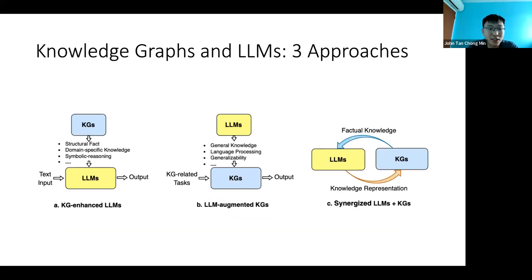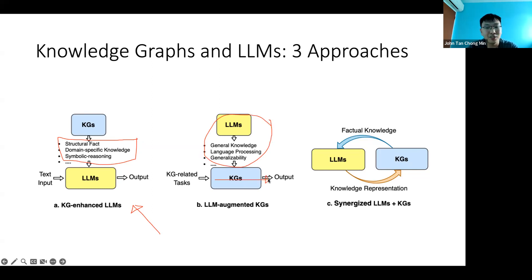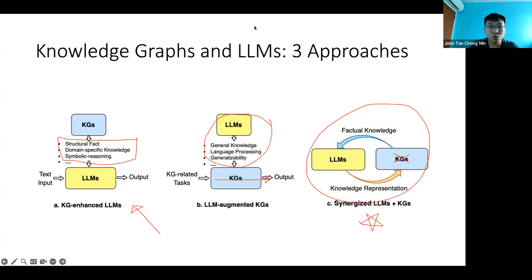There are three approaches I want to talk about today. First: use knowledge graph to enhance large language models — give it structured domain-specific knowledge, similar to text-based grounding, like retrieval augmented generation but from a knowledge graph. Second: use large language models' expressivity to make a better knowledge graph. Third: combine both approaches for a synergized system. I think something like this could embody intelligence, but we need a dynamic knowledge graph — not the current static ones.